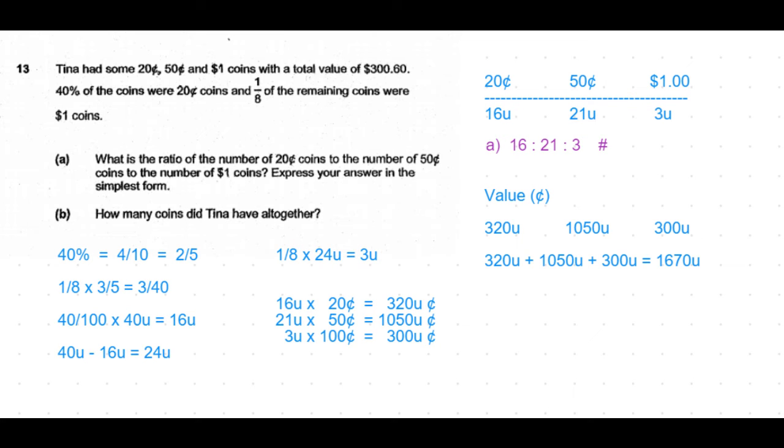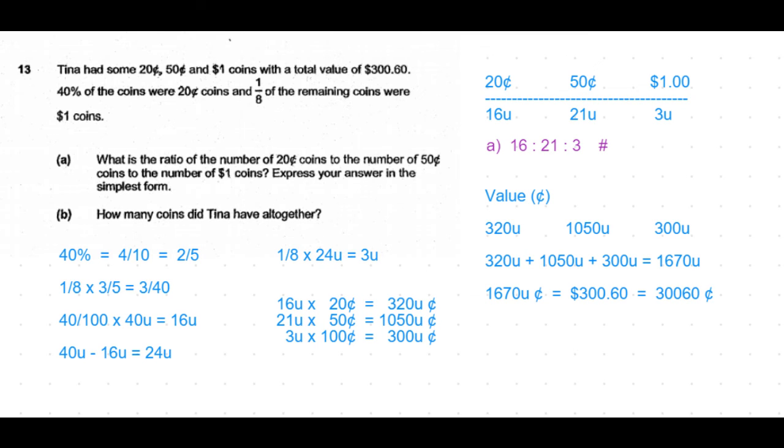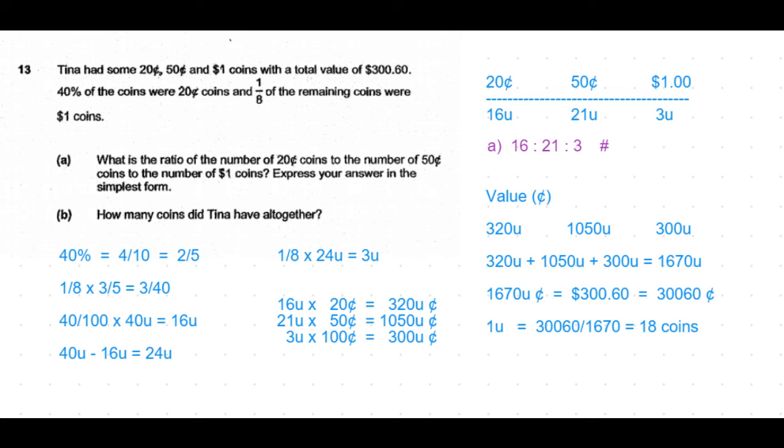That makes the total value 1670 units. But the total value is already given as $300.60, so we convert that to cents, which is 30,060 cents. So 1670u equals 30,060 cents, meaning one unit equals 18 coins. Unit is nothing but the number of coins we assumed earlier.